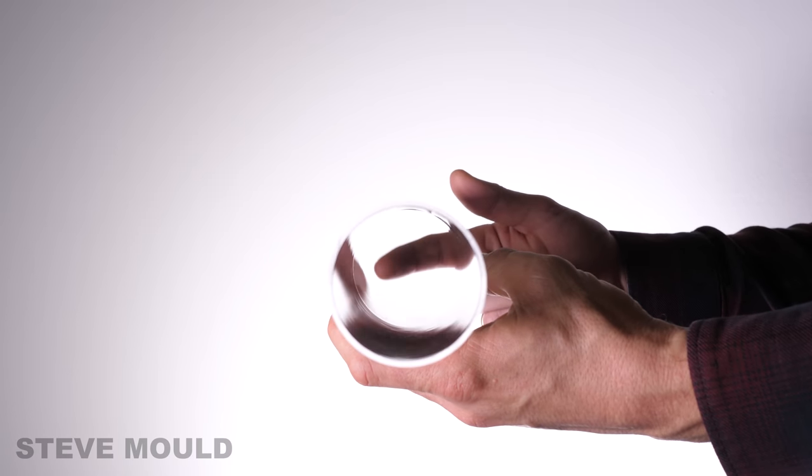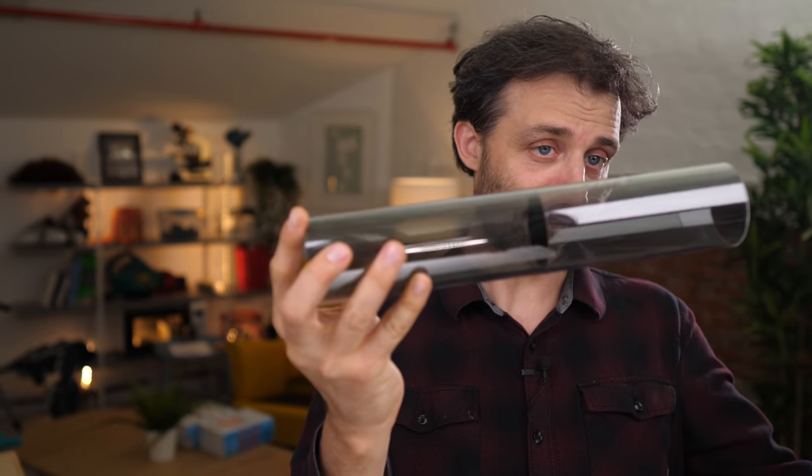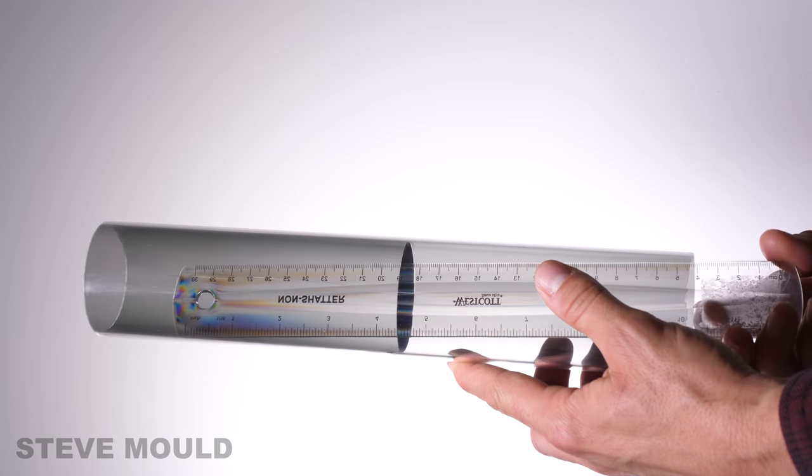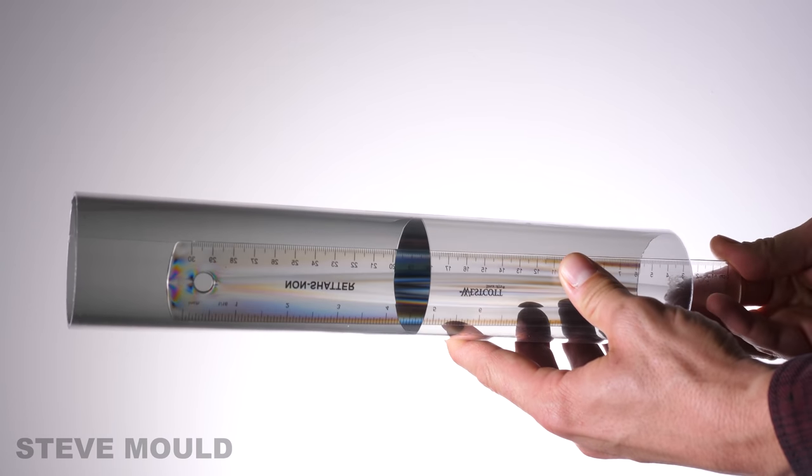The top comment said there was a clear disc in the middle, with no explanation of why that clear disc would look black from the outside. But there isn't a clear disc in the middle—look, I can send a ruler all the way through, wiggle it around and everything.